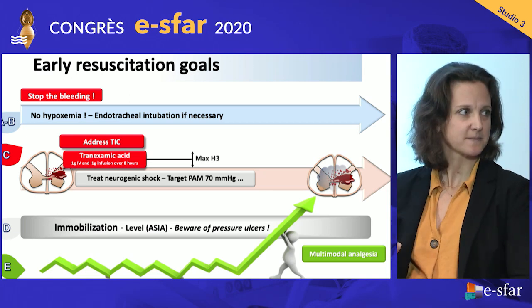Thank you for your talk. You talked a lot about arterial blood pressure. Is it possible, like we do in traumatic brain injury, to monitor something in the spine? Is there maybe an indicator to individualize the therapy? Do you have an opinion on this? Is there some proof in the literature?